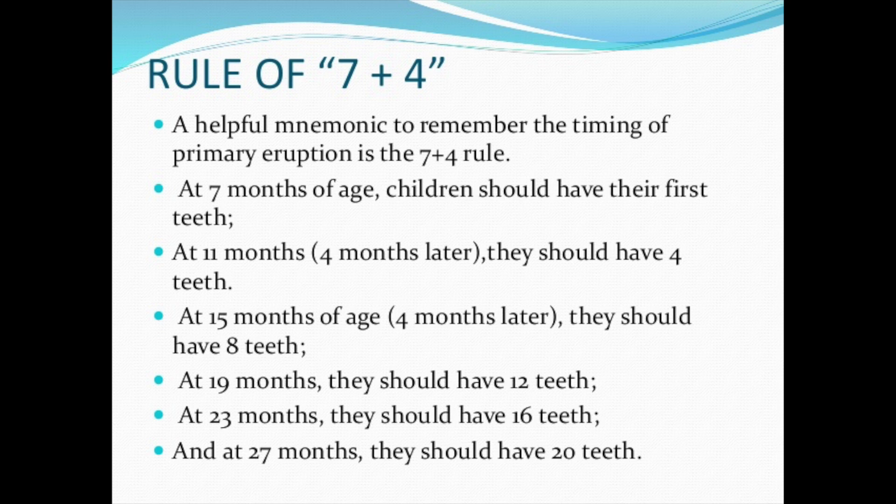Here is another interesting tip, well known as the seven plus four rule. At seven months of age, children should have their first teeth. Add four months — at eleven months they should have four teeth. Add four more — at fifteen months they should have eight teeth, and at nineteen months they should have twelve teeth.